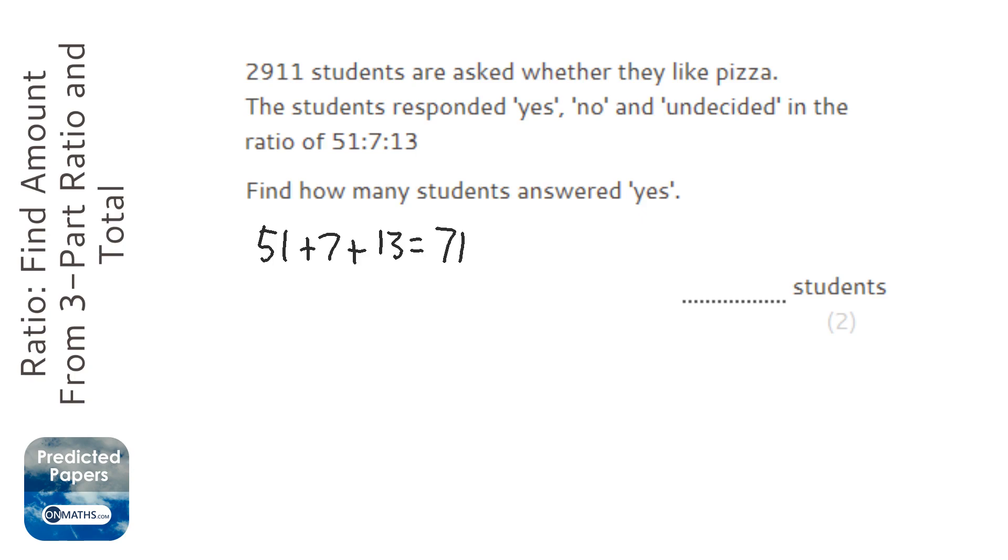The next step is we get the amount of students which is 2,911 and we divide it by the amount of parts which is 71 to work out how much each part is worth. So we type that into our calculator and we get 41. So each part is worth 41.